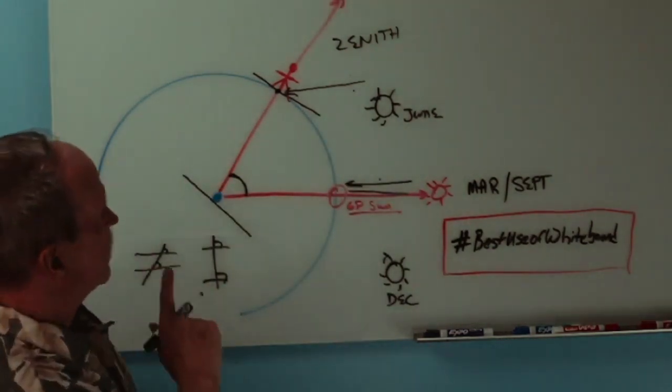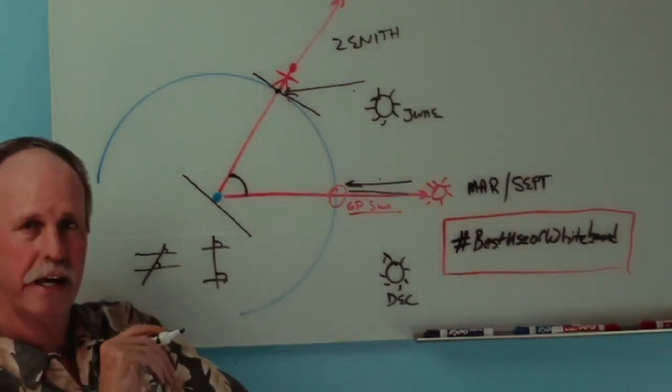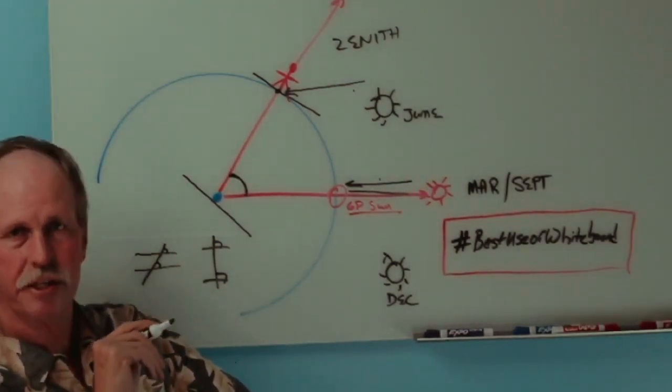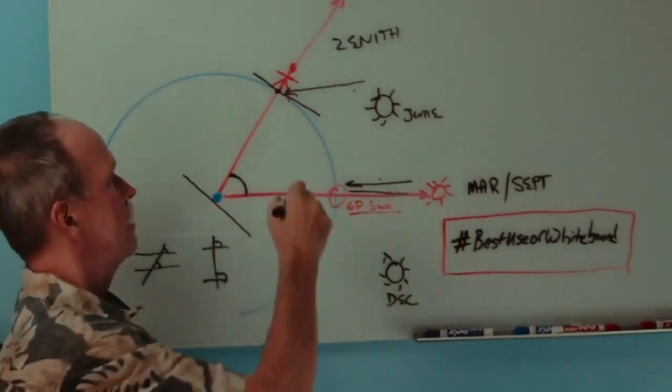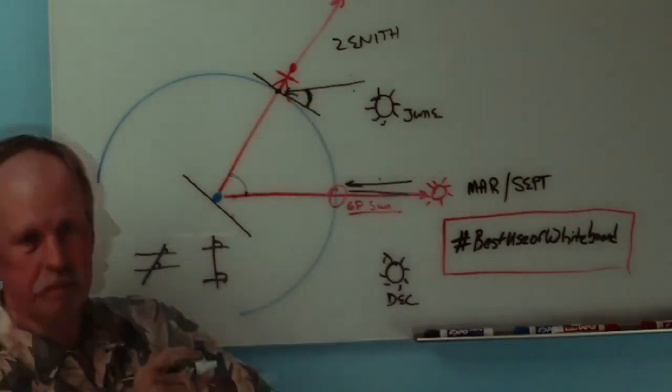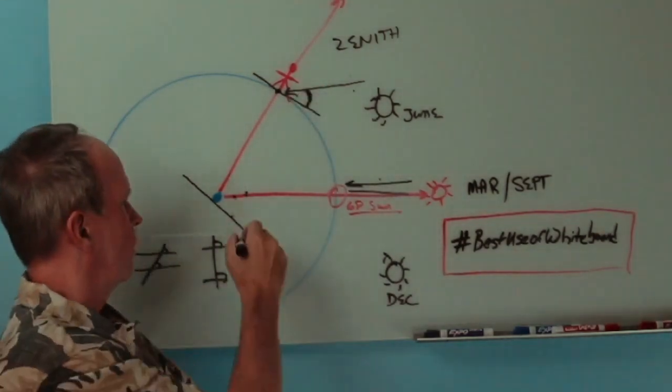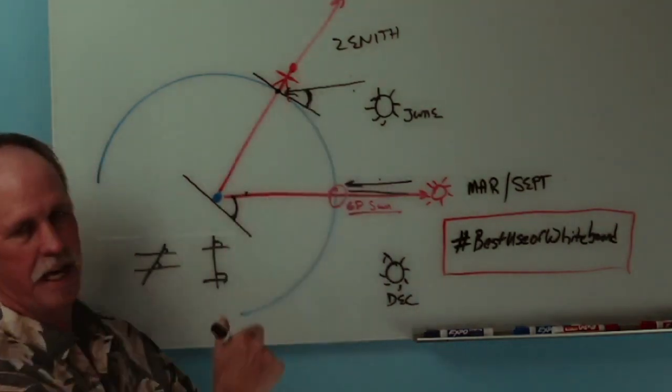What does the sextant actually measure? The sextant measures the angle between the center of the celestial body, in this case the Sun, and the horizon. So it measures this angle right here. So where's that angle down here? Well, it's right here. These are exactly the same angle.